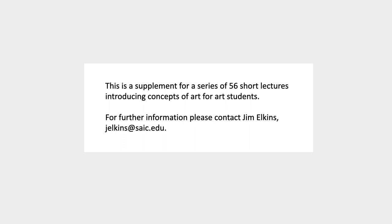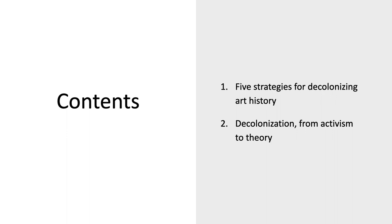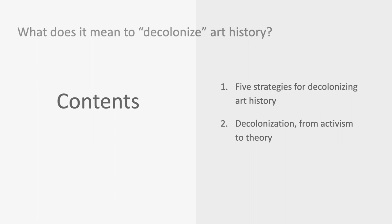Welcome to Theories and Problems in Visual Art. This is History Lecture 29, Decolonizing Art History. First I'm going to talk about five different strategies that have appeared in the recent literature for ways to decolonize art history, and then I'm going to propose that there's a historical development in interest in decolonization from a kind of pure activism to a theory, to a resource that can be used to interpret art.